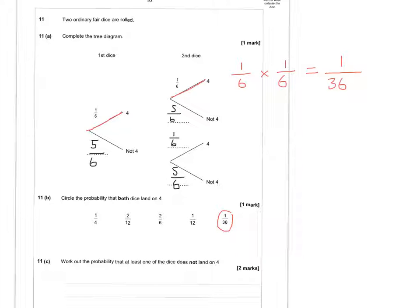For part C, we have to work out the probability that at least one of the dice does not land on a 4. There's a long way or a short way. I'm going to do the short way. We know the chance of both dice landing on a 4. To work out the probability that at least one doesn't land on a 4, we take a whole 1, because all probabilities make a whole 1, and subtract 1/36. So 1 take away 1/36 leaves 35/36. That's 2 marks. There's a longer way, but you should get that as the final answer.